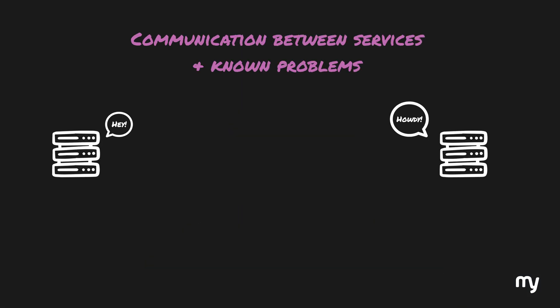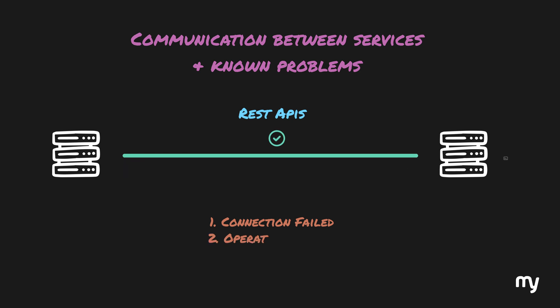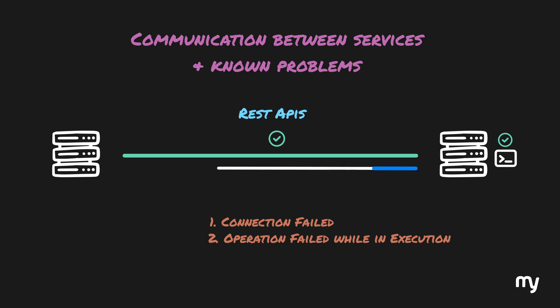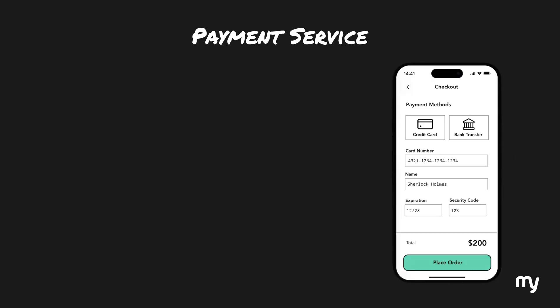When two services are communicating with each other using REST APIs, a lot can go wrong: the connection may not be established so the request never reached the server; the connection was established but the operation failed during execution; or the connection was established, the operation completed, but there was an error while returning the response. We can simply retry the request programmatically. But let's think about a tricky scenario — implementing a payment service that takes money from a customer's account when they buy something. The payment request could look something like this, with a user trying to make a purchase for $200.